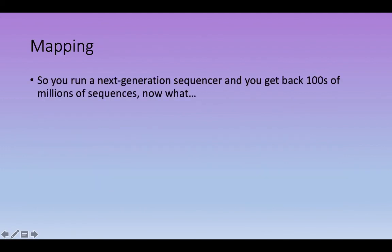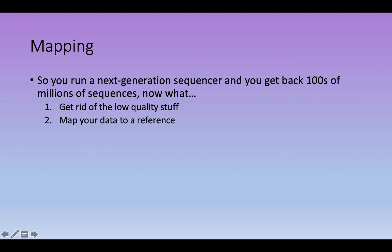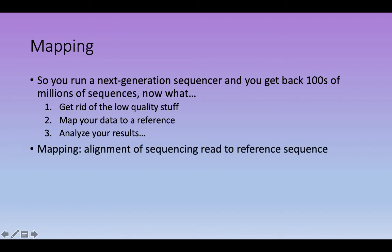After a next-generation sequencing run, you get back millions of reads — now what? First, you remove low-quality components: trim adapters, trim low-quality sequence. Then the next step in most studies is to map your data to a reference. Once you've done that, depending on your experiment, you analyze your results. Mapping is defined as the alignment of sequencing reads to a reference sequence.